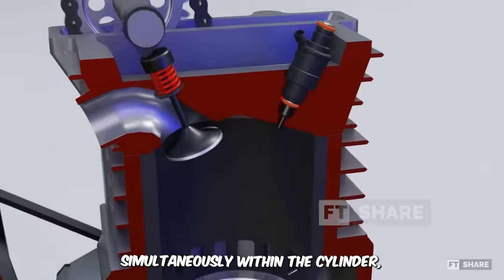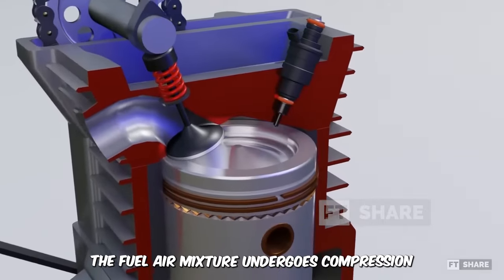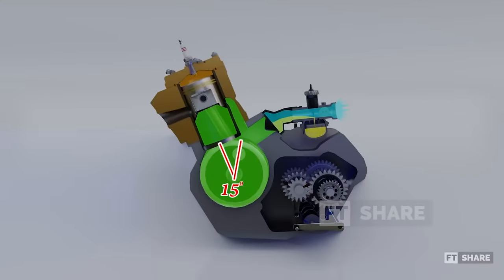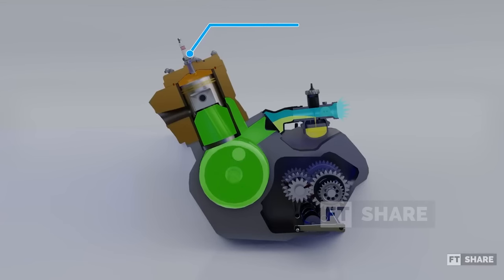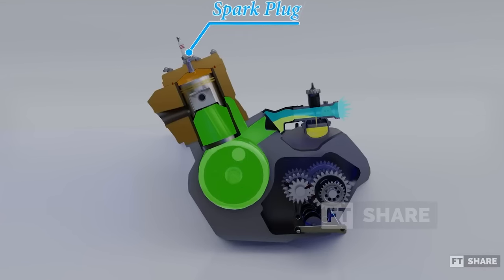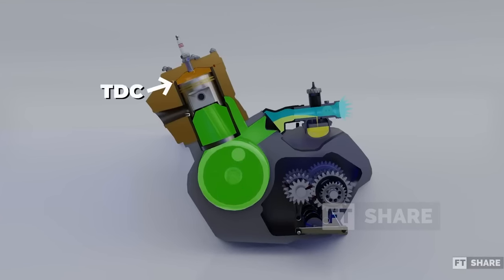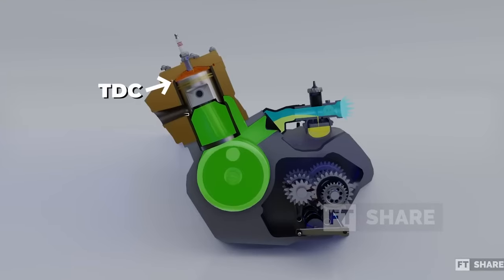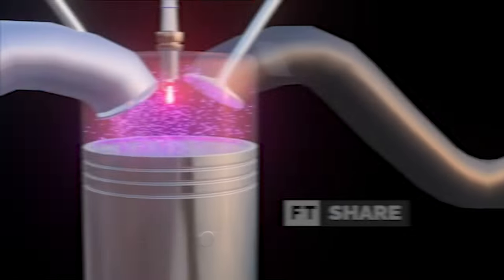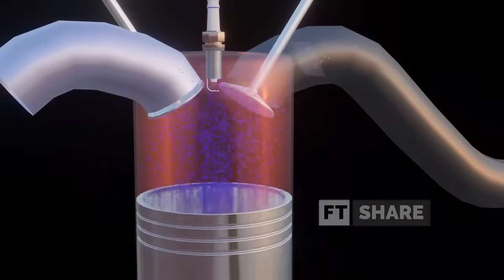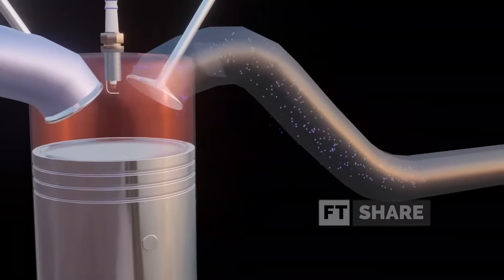Simultaneously, within the cylinder, the fuel-air mixture undergoes compression. Approximately 15 degrees before the piston reaches the top dead center, or TDC, the spark plug ignites, ensuring a well-timed ignition as the piston approaches TDC. This ignition leads to the propagation of a flame throughout the compressed air-fuel mixture.